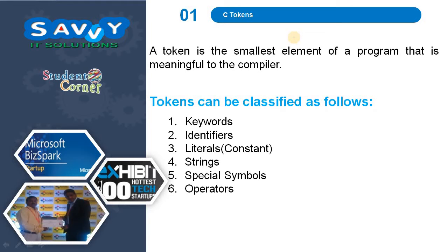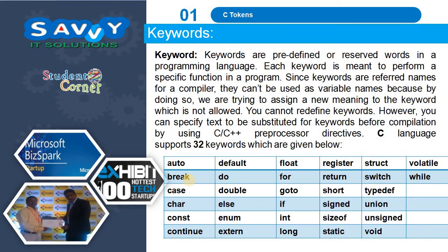A token is the smallest element of a program that is meaningful to the compiler. The types of tokens are Keywords, Identifiers, Literals, Strings, Special Symbols and Operators. Now let us look at them one by one.